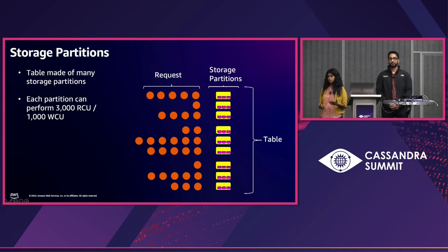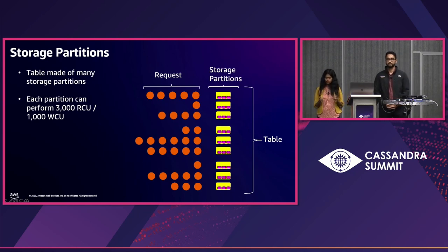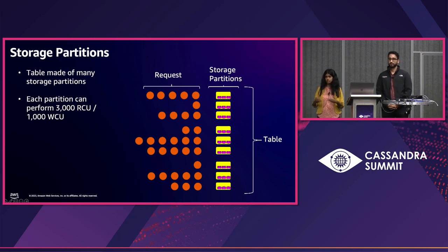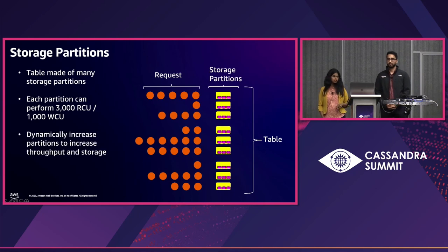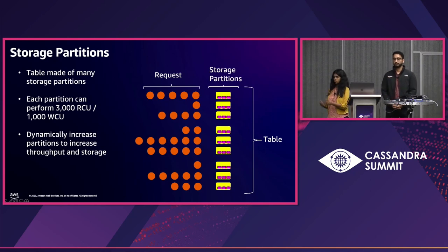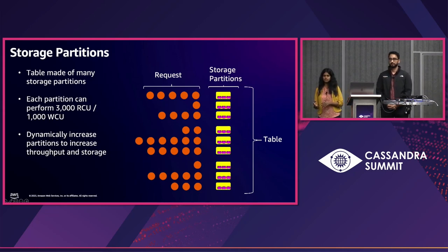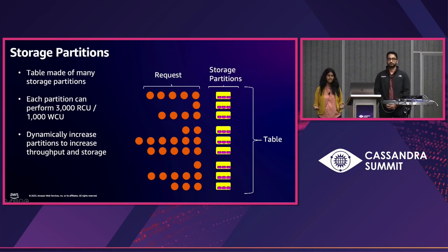We limit each partition to this capacity because we want a predictable ceiling so we know we can scale without noisy-neighbor impacts. If a customer wants additional throughput, we dynamically increase the number of partitions to double the throughput or storage. We do this behind the scenes — customers can give us a hint by increasing their RCU or WCU on the table, which also triggers partition growth.